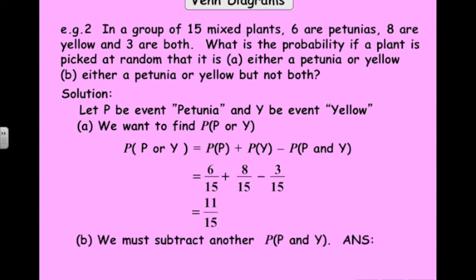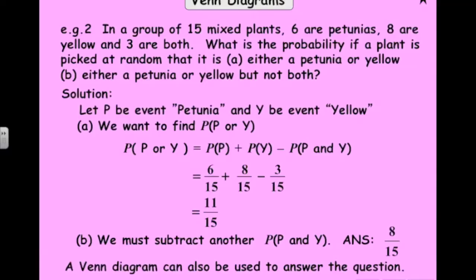The probability that it's either a petunia or yellow, but not both? Well, we've got to subtract another probability of P and Y from the middle. So the answer is 8 over 15. That last one's easier to see with a Venn diagram. So let's do that with a Venn diagram.